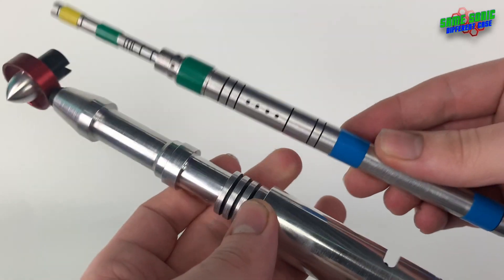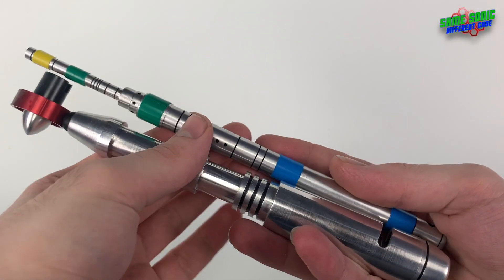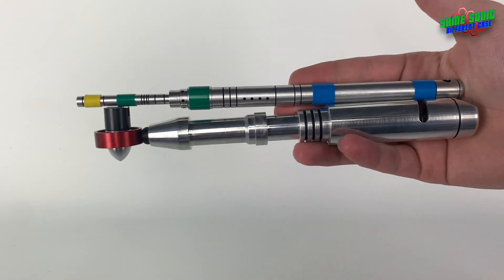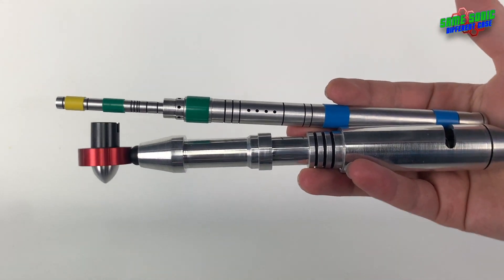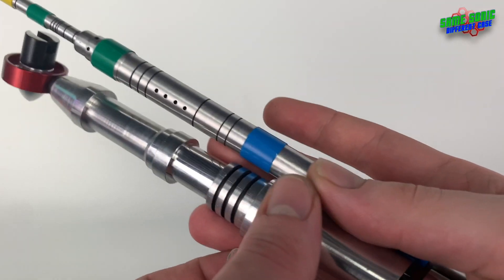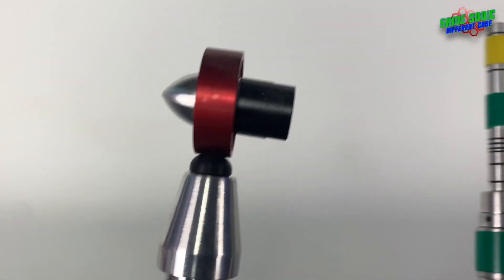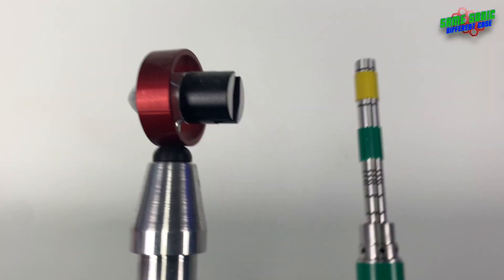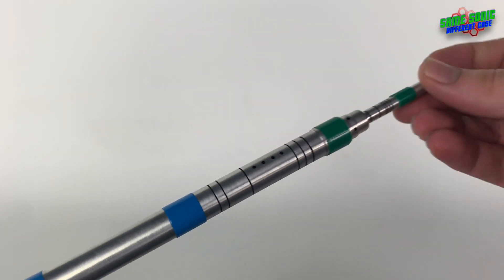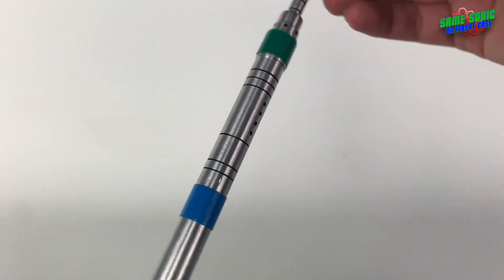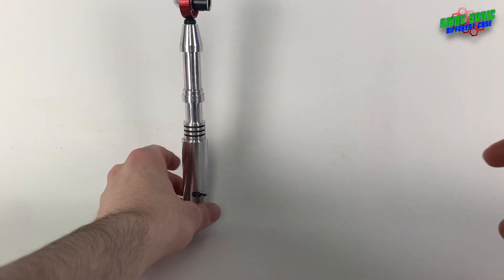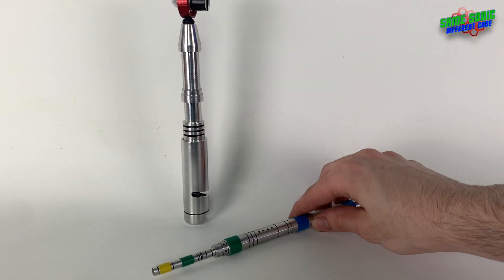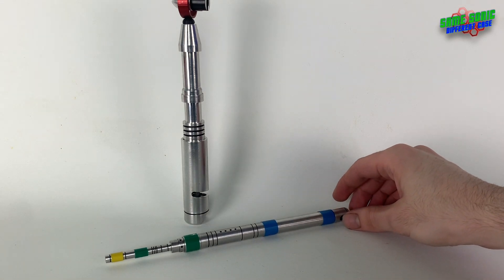They're not too similar in size. You can see that the Romana Screwdriver is actually just a tad bigger than the fourth Doctor's. But these are from different people, so I'd imagine if you've got James to make a fourth Doctor's screwdriver, I think they sit in scale quite nicely with each other. But yeah, it's not too bad really. And it's a great little prop to have.